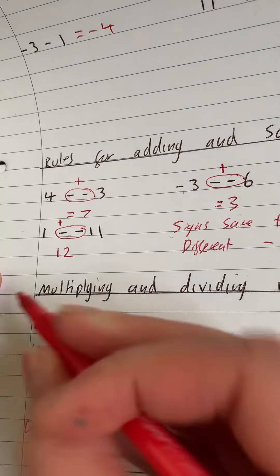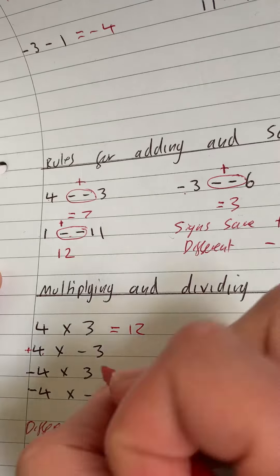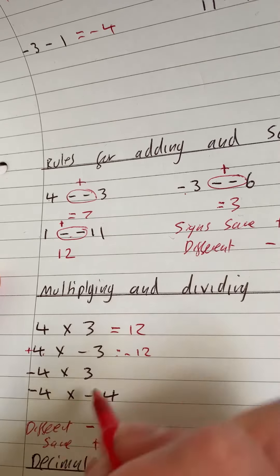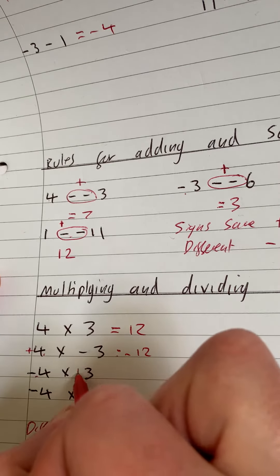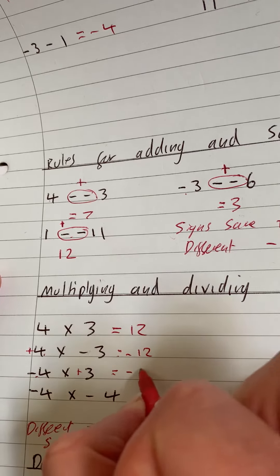So 4 times -3, this is the same as having a +4, so they're different, so we've got -12. These are different, that's the same as a +3, so we've got -12.